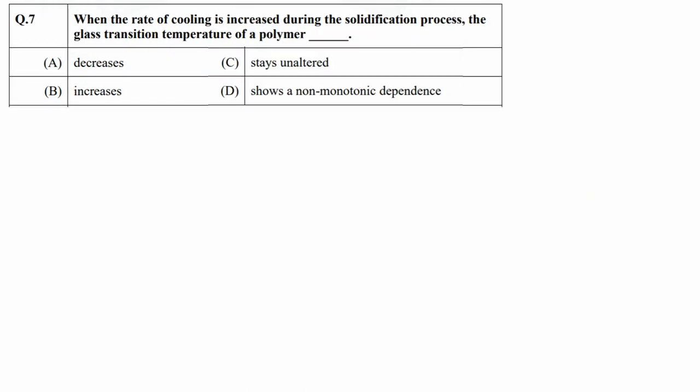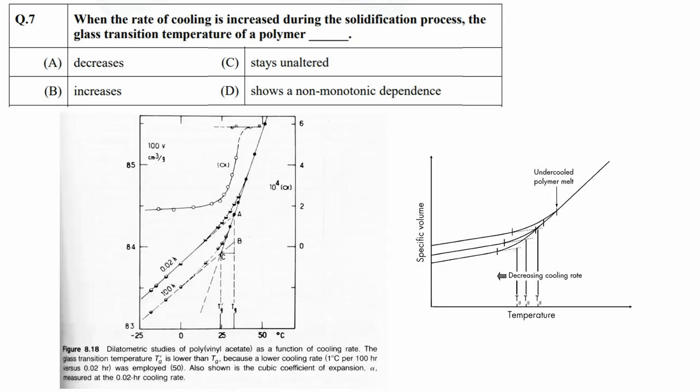In this question, you need to find out what will happen to the glass transition temperature of a polymer if cooling rate is increased during solidification process. I think this question is a little vague since the type of polymer is not given. The effect of cooling rate on glass transition temperature of amorphous and semi-crystalline polymers will be different since in one case it influences the free volume whereas in another case it will influence the percent crystallinity. As it is not given which type of polymer this is, we will consider this as an amorphous polymer.